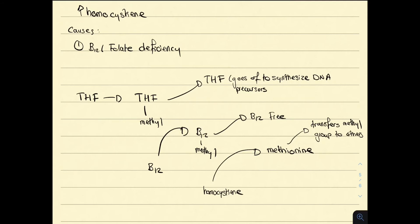So again, we start off with tetrahydrofolate. This is rapidly methylated. B12 sees this and takes the methyl group off tetrahydrofolate. So we end up with free tetrahydrofolate that goes off to synthesize DNA precursors and methylated B12. Homocysteine then sees the methylated B12 and takes the methyl group, forming methionine and freeing up the B12. Methionine can now transfer the methyl group elsewhere. So if we have a deficiency in folate or a deficiency in B12, we end up with an accumulation of homocysteine. This is how B12 and folate deficiencies result in hyperhomocystinemia.